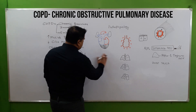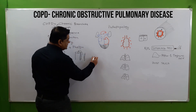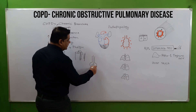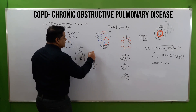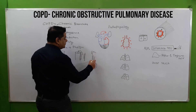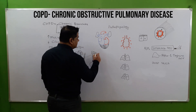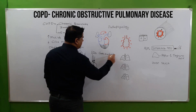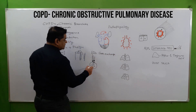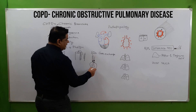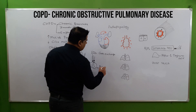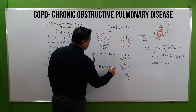Our airways are taking in oxygen and sending out CO2. If there is obstruction, oxygen cannot come in, so there will be less gas exchange. When CO2 is not able to go out, it gets accumulated in the alveoli — that is called air trapping.